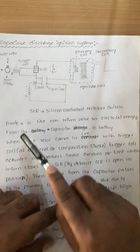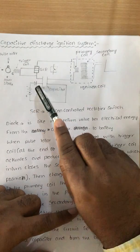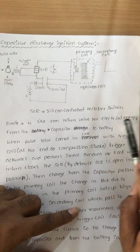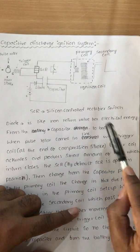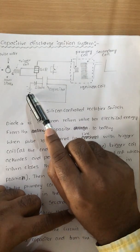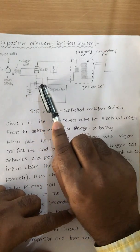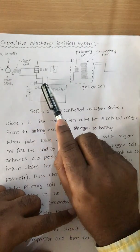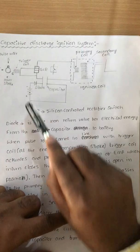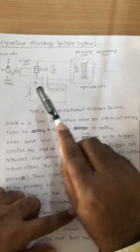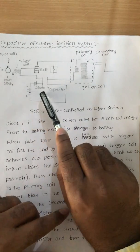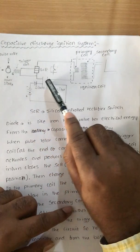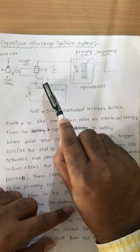The diode acts like a non-return wall for electrical energy from the capacitor to the battery. Electrical energy is transferred only from the battery to the capacitor. The return of current from the capacitor to the battery is not allowed by the diode. It allows current flow in only one direction — from battery to the capacitor.